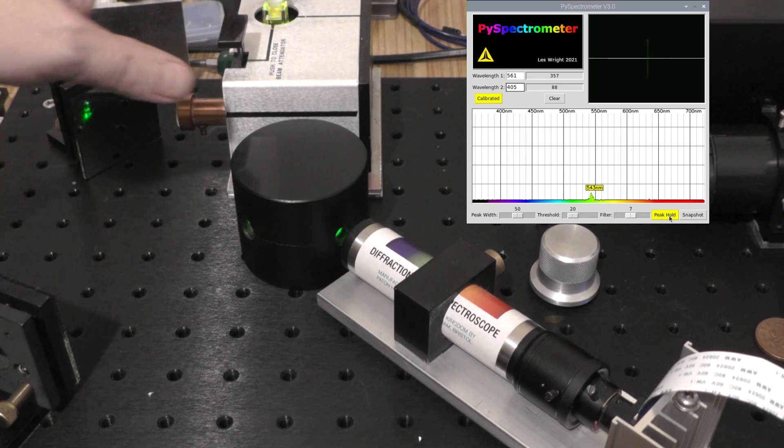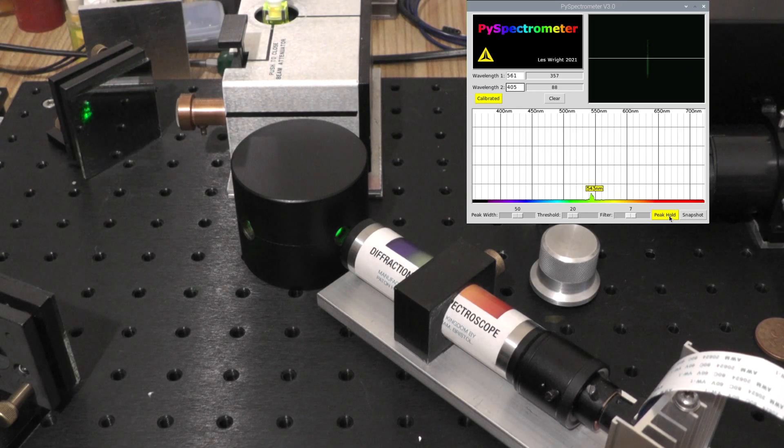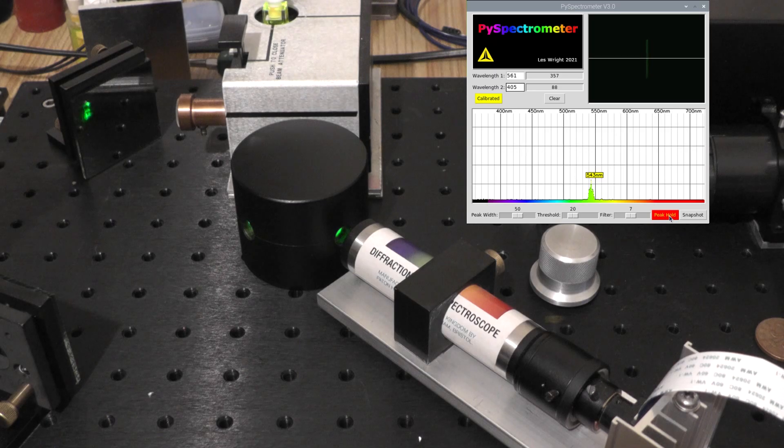I've just loaded Rhodamine 6G into the dye laser there and we'll begin the tuning process. Let's hit peak hold and tune all the way through and see what we get. Again, I'm kind of rushing with this but it'll be good enough for this video.